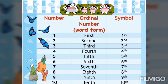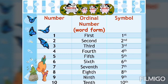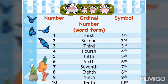The number one is written in word form as 'first' and in symbol as '1st.' When you read them they sound the same — first and first — but they are different in writing or spelling. The number two is 'second' in word form and '2nd' in symbol. Number three is 'third' and '3rd.' Number four is 'fourth' and '4th.' Number five is 'fifth' and '5th.'